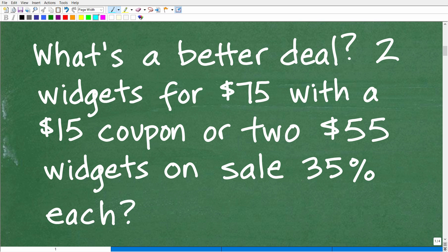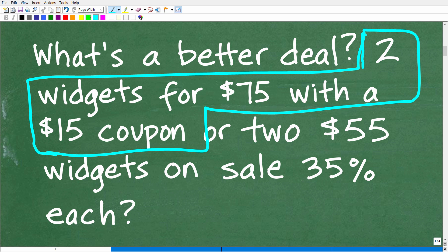So we have two deals to consider. The first being two widgets for $75 with a $15 coupon. So this is our first deal. And then we want to go ahead and calculate this other deal: two $55 widgets. In other words, each widget normally costs $55, but they're on sale for 35% off each.